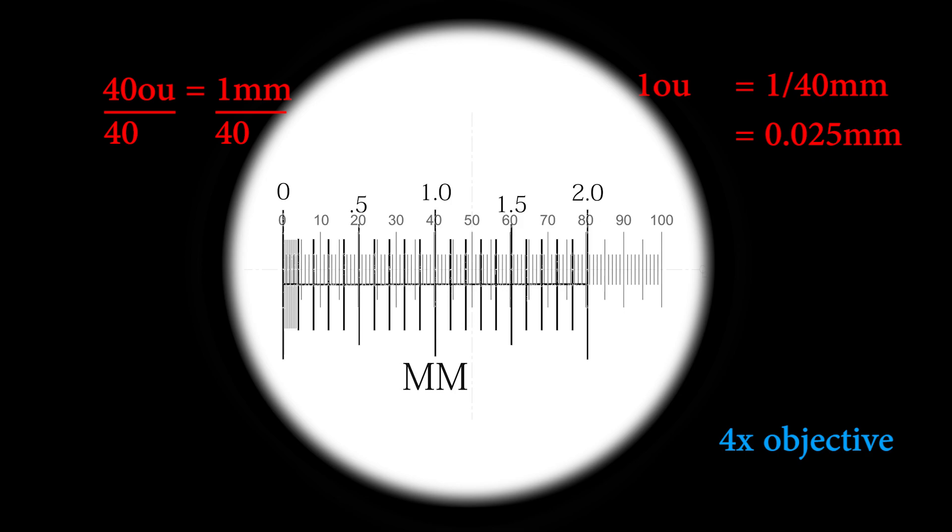Therefore, 1 ocular unit is 0.025mm at the 4x objective power.